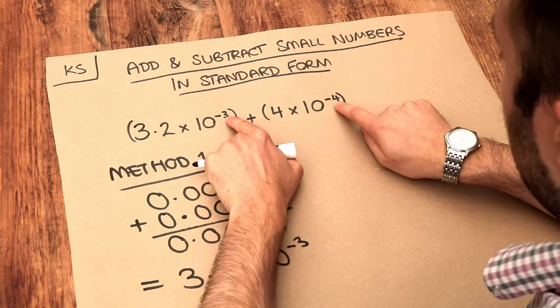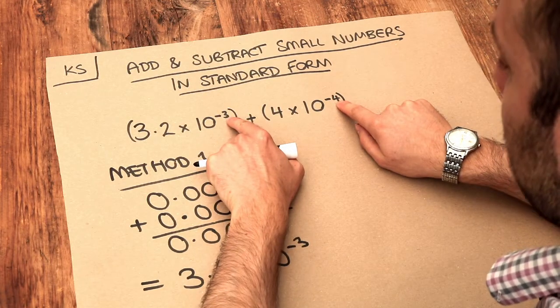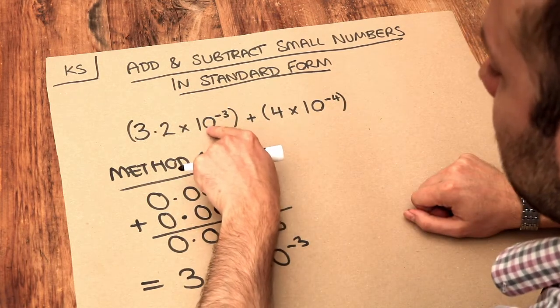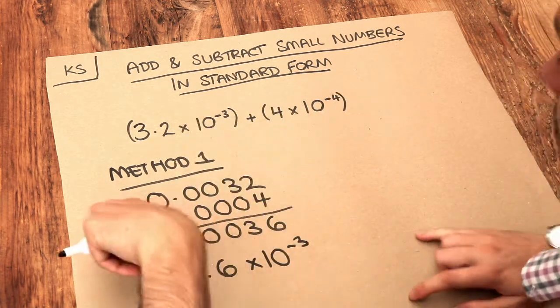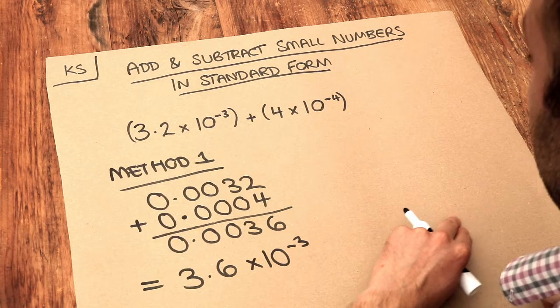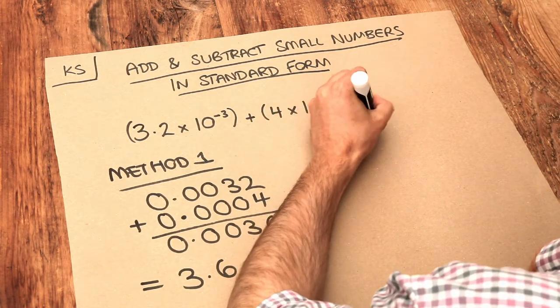And that will work, provided these two numbers are not too far away from zero. But if you imagine this is like, say, 10 to the minus 100, that's going to make this method very hard because you're going to have to write out 100 zeros on the front. So the clever way to do it is this method two.